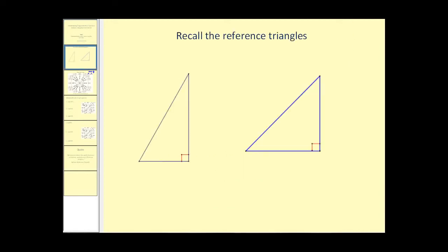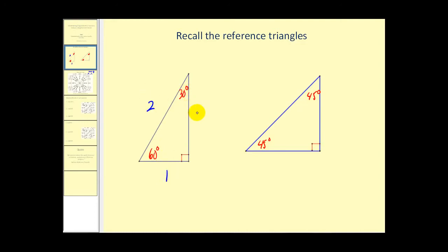Before we jump to the unit circle, let's take a look at our reference triangles. Remember, if we have a 30-60-90 right triangle, the sides relate in a special way. We can label the short leg one, the hypotenuse two, and the other leg square root of three, or any multiple of this.